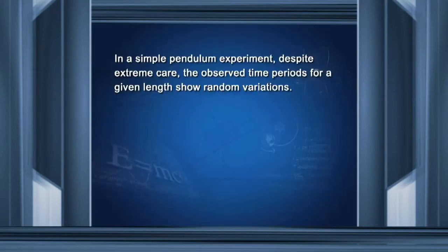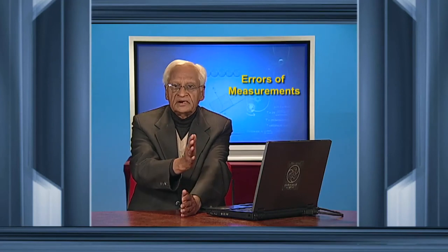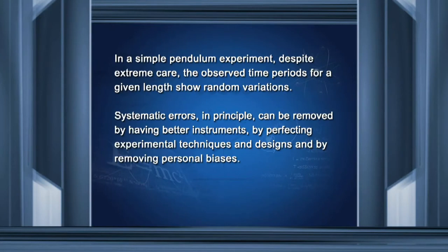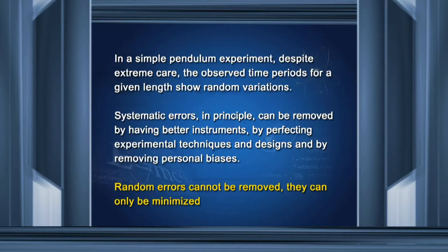In a simple pendulum experiment, despite extreme care, the observed time periods for a given length show random variations — the time is not always the same, sometimes it is less, sometimes more. Systematic errors can in principle be removed by having better instruments, by perfecting experimental techniques and designs, and by removing personal biases. But random errors cannot be removed; they can only be minimized.